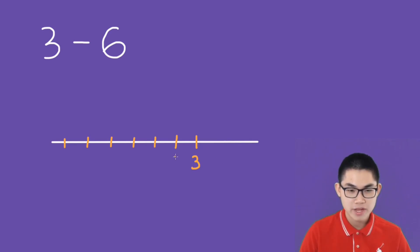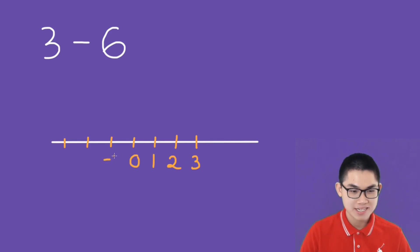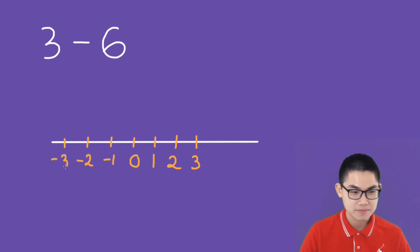So here is 3, then we have 2, 1, 0, negative 1, negative 2, negative 3. So the final answer will just be negative 3.